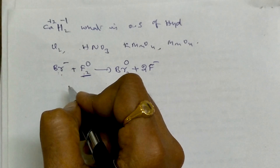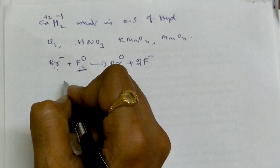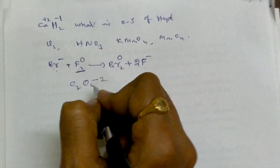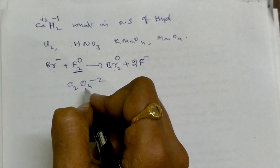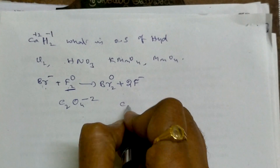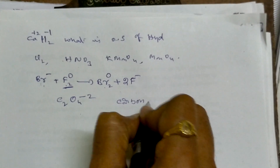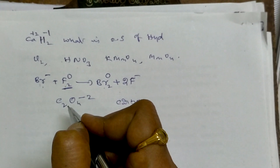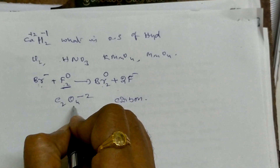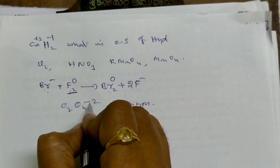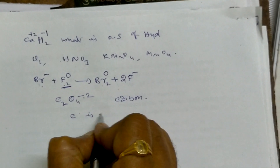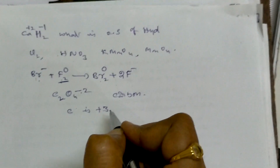In the C₂O₄²⁻ ion, what is the oxidation number of carbon? Oxygen contributes 4 times minus 2, which is minus 8. Minus 8 minus (minus 2) equals minus 6. Divided by 2 gives plus 3. So carbon is in the plus 3 oxidation state.